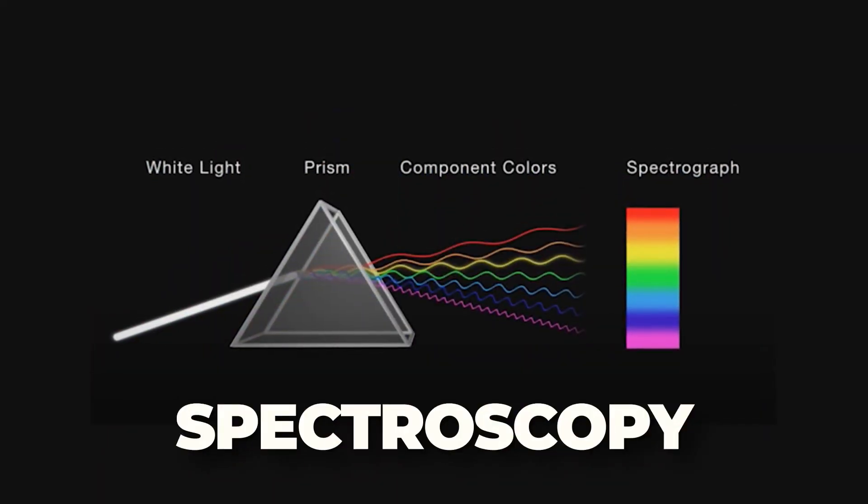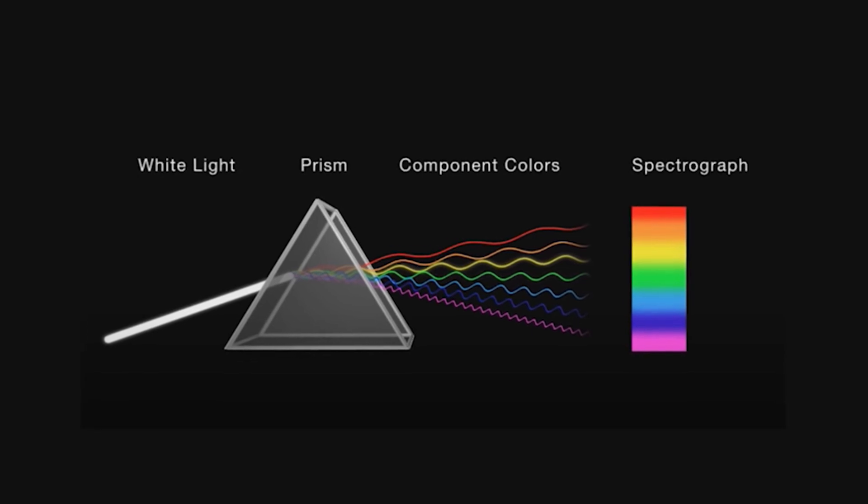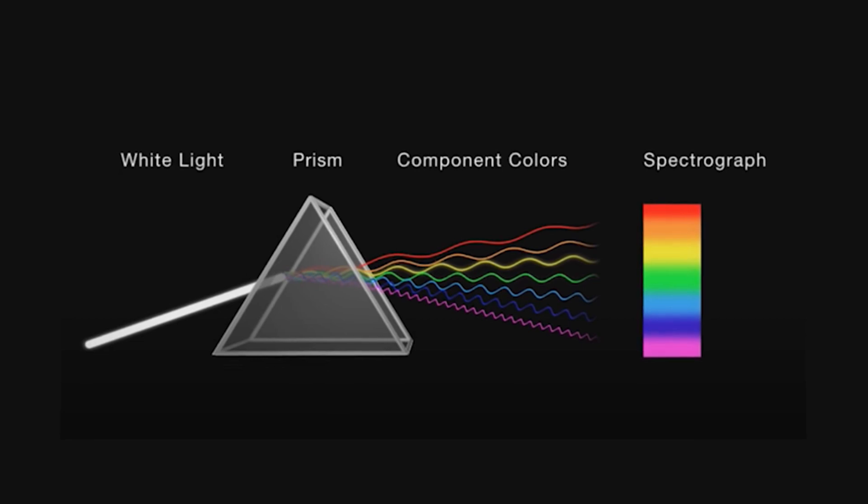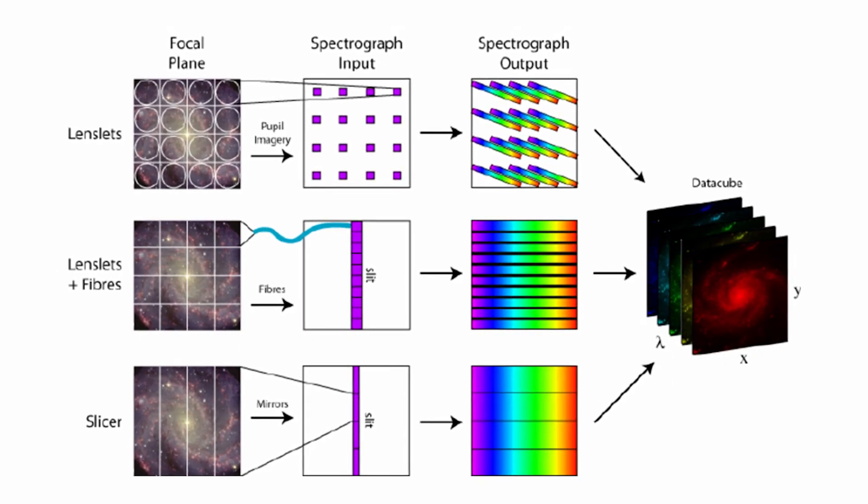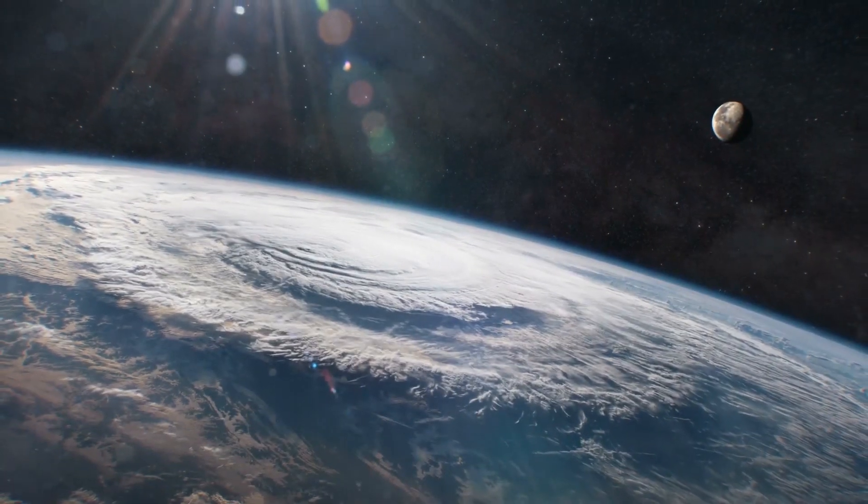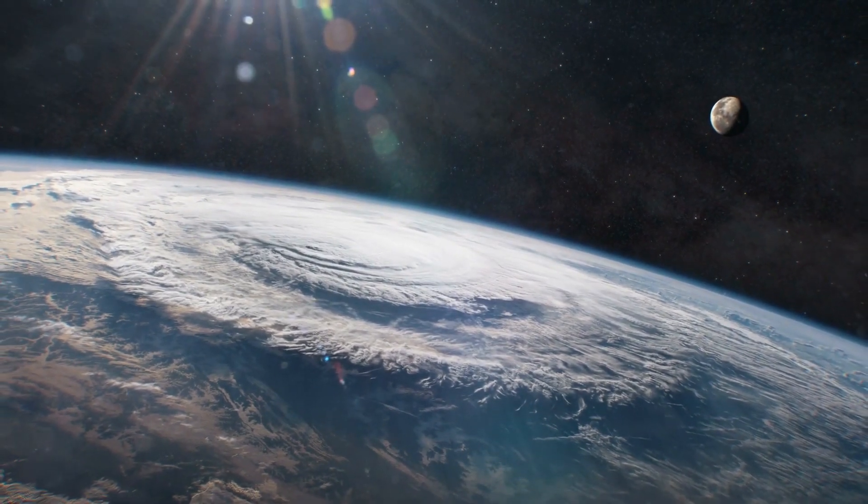Spectroscopy is the study of measuring the intensity of light at various wavelengths, and it is as simple as that. This kind of data is represented graphically in the form of spectra, and they are essential in understanding the composition of exoplanet atmospheres.